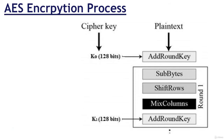Next, let's discuss shift rows. Each of the 4 rows of the matrix is shifted to the left. Any entries that fall off are reinserted on the right side of the row. The shift is carried out as follows: the first row is not shifted; the second row is shifted 1 byte position to the left; the third row is shifted 2 positions to the left; and the fourth row is shifted 3 positions to the left. The result is a new matrix consisting of the same 16 bytes, but shifted with respect to each other.